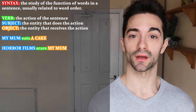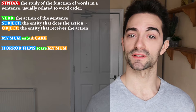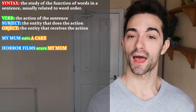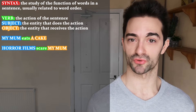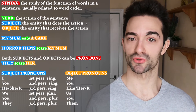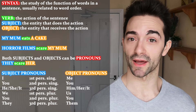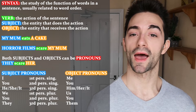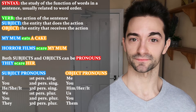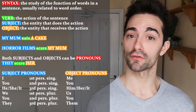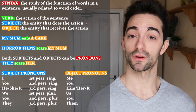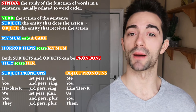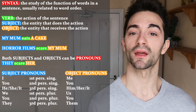So if I say horror films scare my mum, horror films is the subject and my mum is the object. Both subjects and objects can be substituted by pronouns, so we have two categories: subject pronouns, who do the action, and object pronouns, who receive the action. In the sentence horror films scare my mum, horror films — which is the subject — can be substituted by they, and my mum — which is the object — can be substituted by her. So: they scare her.